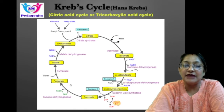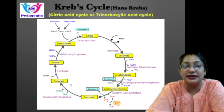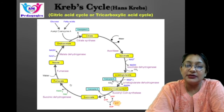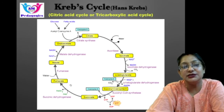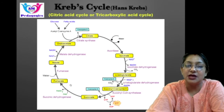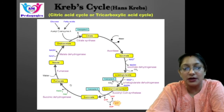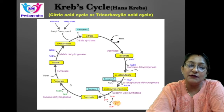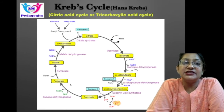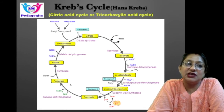When electrons are transferred from energy-rich molecules like NADH and FADH2 — produced in glycolysis, citric acid cycle, and fatty acid oxidation — to molecular oxygen by a series of electron carriers, oxygen is reduced to water. This takes place in the inner membrane of mitochondria. These four stages constitute cellular respiration.